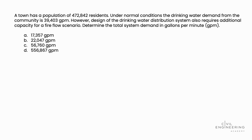A town has a population of 472,842 residents. Under normal conditions, the drinking water demand from the community is 39,403 gallons per minute (GPM). However, design of the drinking water distribution system also requires additional capacity for a fire flow scenario. Determine the total system demand in gallons per minute (GPM).